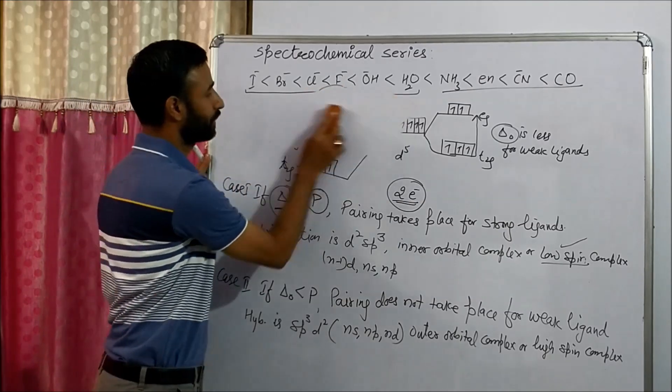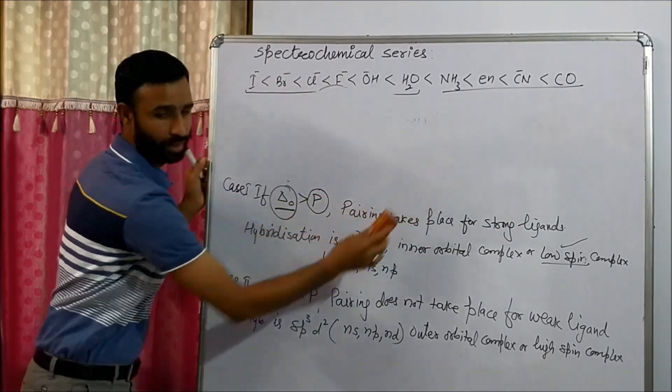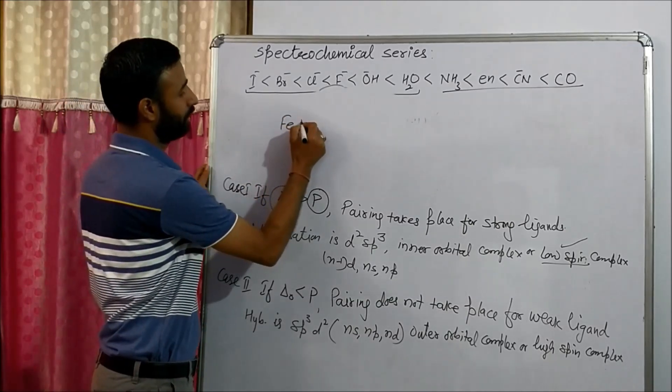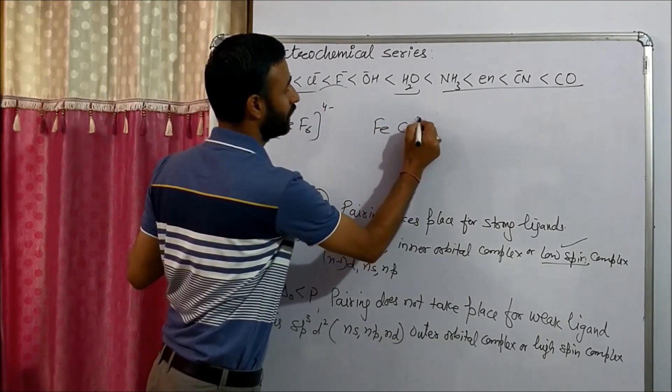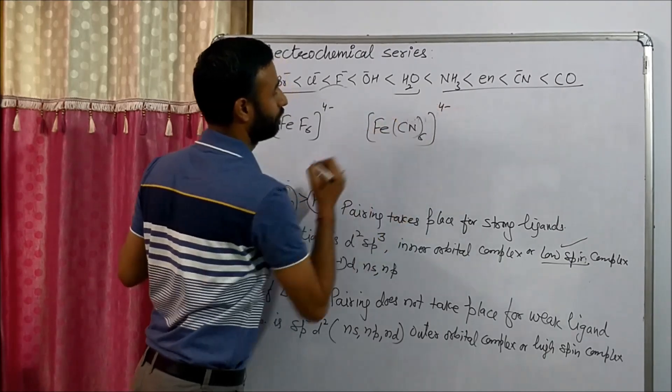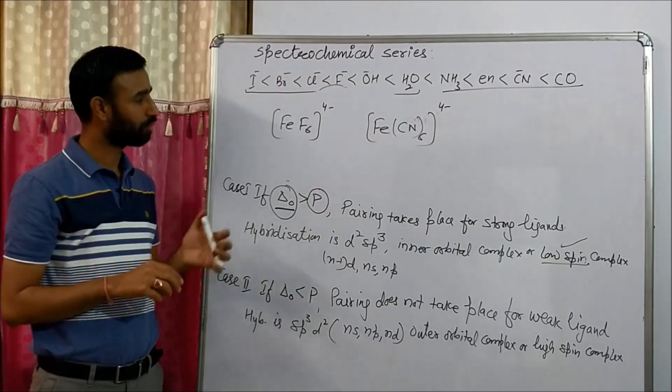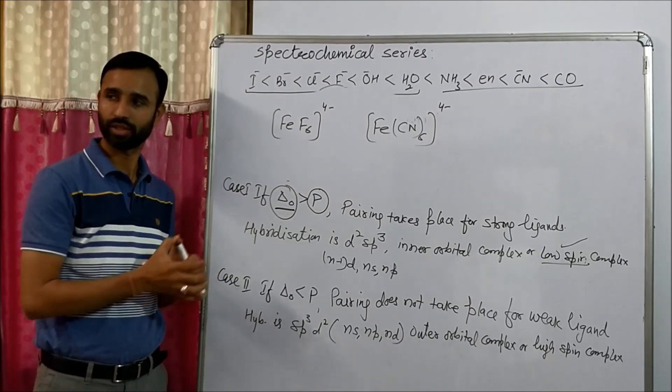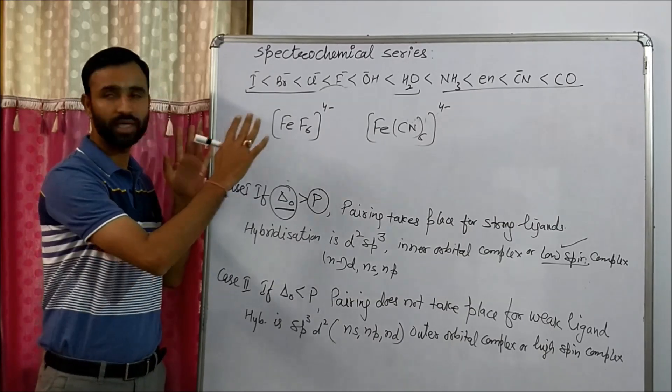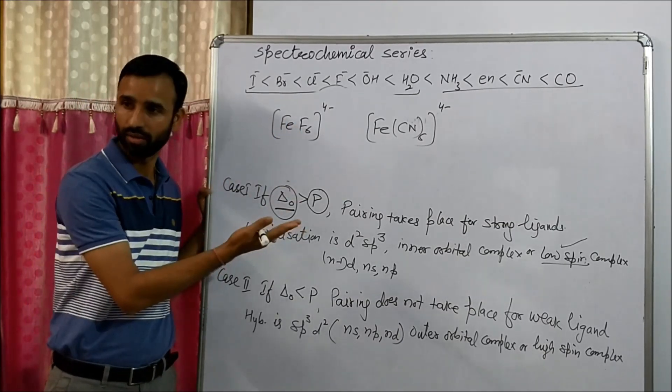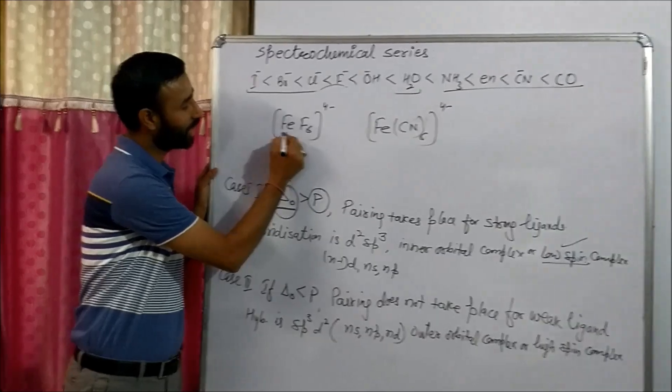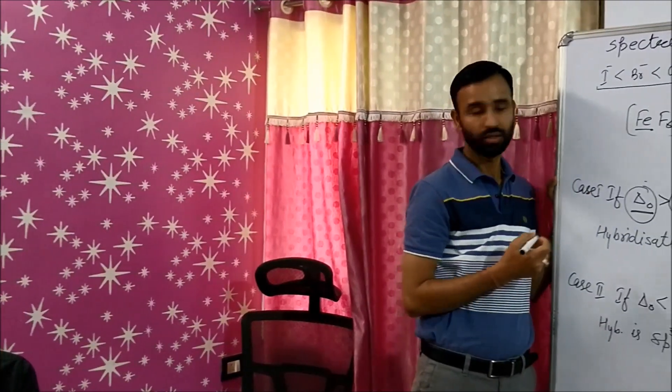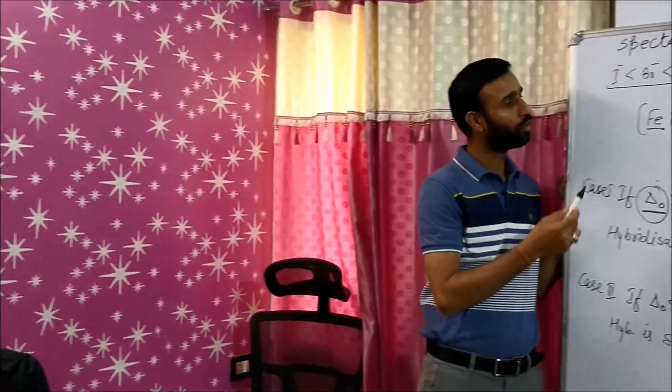if we compare Fe(F6)4- and Fe(CN6)4-. See, in both the cases, what is coordination number? Six. Both have six coordination number. So arrangement is octahedral. Now tell me, what is the hybridization of this Fe? Fluoride is weak ligand or strong ligand? Weak ligand. If it is a weak ligand, then what is the hybridization? sp3d2?